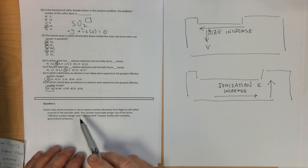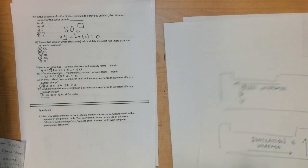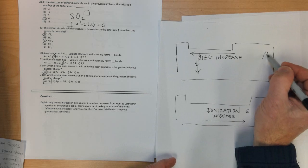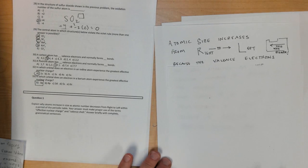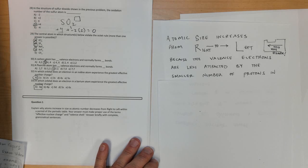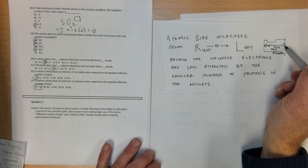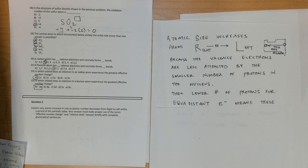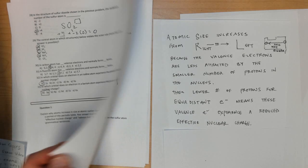Practice test part 3. Explain why atoms increase in size as atomic number decreases from right to left. So atomic size increases as you go from right to left. Why does that happen? Well, atomic size increases from right to left across a periodic table because the valence electrons are less attracted by the smaller number of protons in the nucleus. There are less protons in the nucleus for atoms over here than over here on the periodic table in a given period. The lower the number of protons for the nearly equidistant electrons, equidistant from the nucleus that is, means these valence electrons experience a reduced effective nuclear charge. That's question number one.